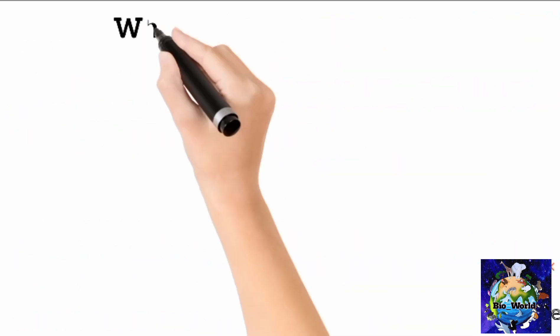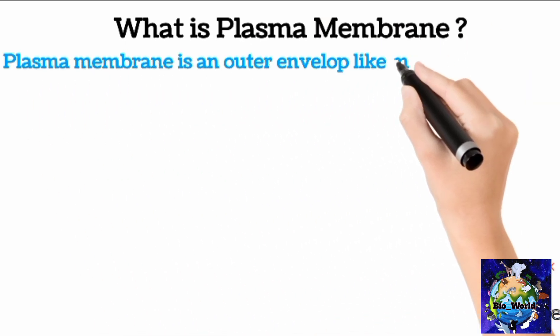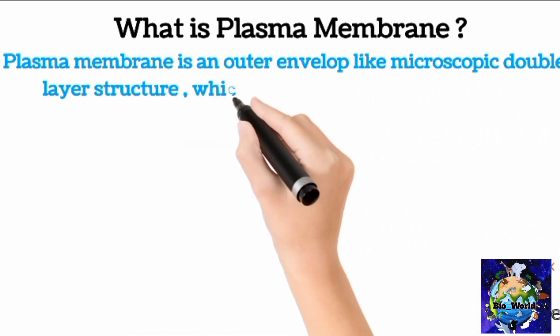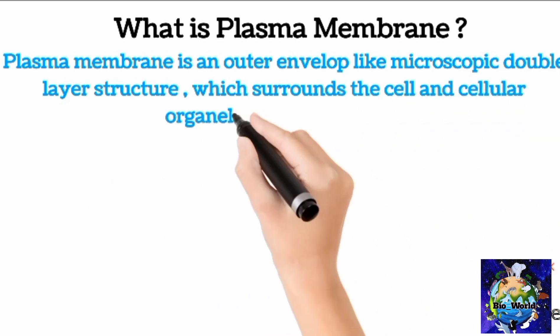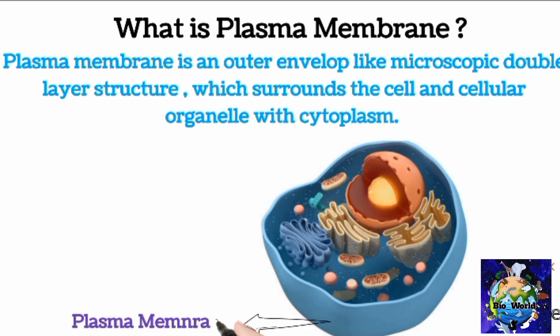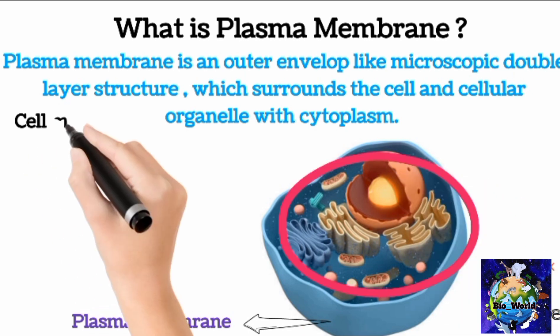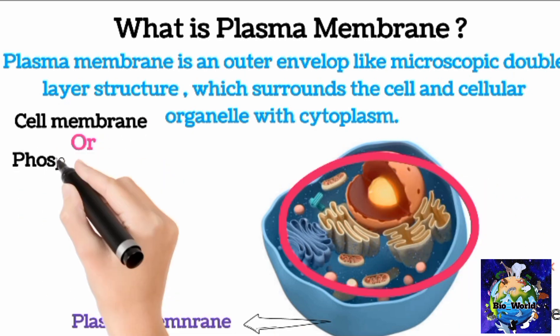So let's start with what is plasma membrane. Plasma membrane is an envelope-like microscopic double layer structure which surrounds the cell and cellular organelles with cytoplasm. You can see in this cut section of the cell diagram, blue color is a plasma membrane that encloses the cellular organelles.